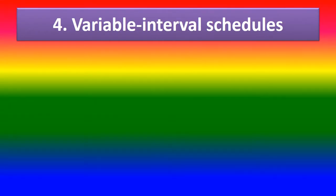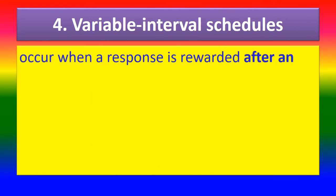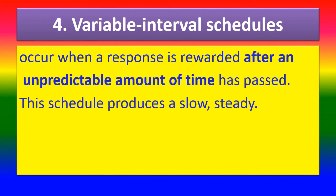Fourth, Variable Interval Schedules: when a response is rewarded after an unpredictable amount of time has passed, this schedule produces a slow steady rate of responding.